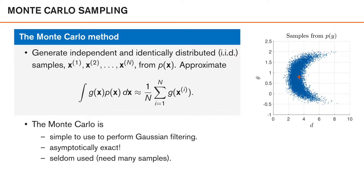Surely you are aware of the fact that there are many techniques to approximate integrals. However, since these integrals represent expected values, there are special techniques that we can use. A very general and useful technique is the Monte Carlo method. The idea is simply to generate independent and identically distributed samples x1 to xN from p of x, and make use of the fact that expected values can be approximated by sampling averages. So the expected value of g of x, where x is distributed according to p of x, is approximately 1 over N times the sum of g of xi. According to the law of large numbers, this is asymptotically exact as you increase the sample size N.